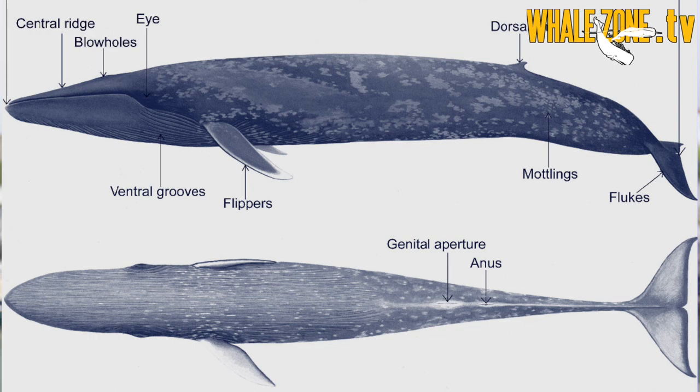Whale lice also aggregate around the rostrum, the margins of the lips, and the genital slits of the whale.